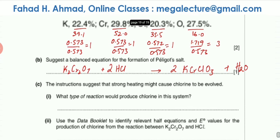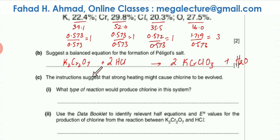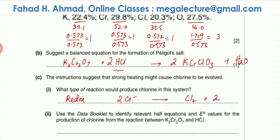Part c: the instructions suggest that strong heating might cause chlorine to be evolved. What type of reaction would produce chlorine in this system? The answer is a redox reaction, because chlorine is in the form of HCl where Cl is −1, and if chlorine gas is produced, oxidation has occurred. Oxidation doesn't happen alone — there must be reduction as well. So Cl⁻¹ ends up changing to Cl₂, confirming a redox reaction.